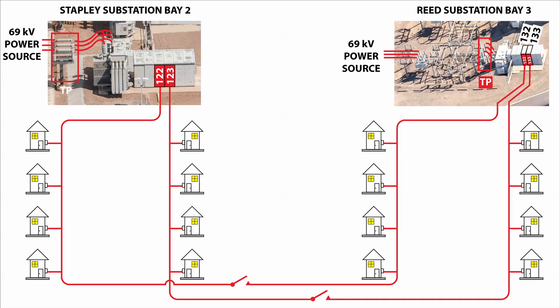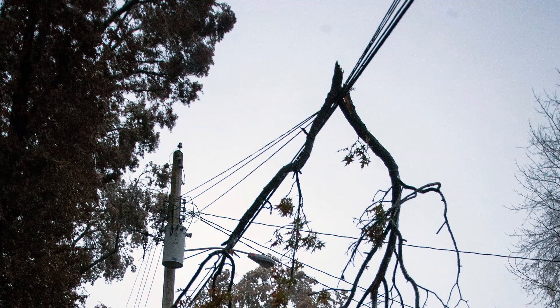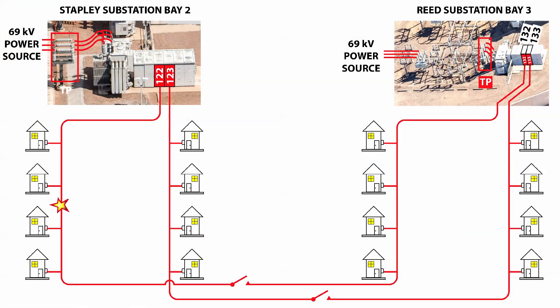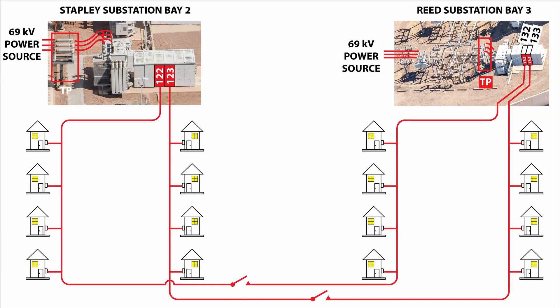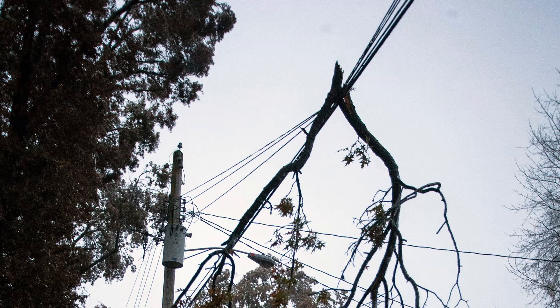The first scenario we will discuss is a fault which occurs on the circuit fed by Stapley circuit breaker 122. A tree branch breaks in a storm and falls onto an overhead line. At first when the fault occurs, a relay senses the fault and the circuit breaker in the 122 cabinet opens momentarily and then automatically recloses. The idea of reclosing is that some faults are temporary — for example, a tree branch, after contacting the power line, may fall to the ground clearing the fault.